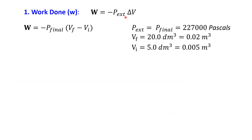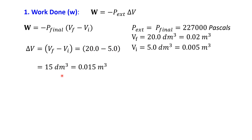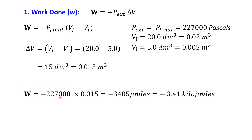Back to our work formula. The external pressure P_ext equals the final pressure, 227,000 pascals. The change in volume ΔV is V final minus V initial, which is 20.0 minus 5.0 equals 15.0 decimeters cubed, or 0.0150 cubic meters. So the work done by the gas is W equals negative 227,000 multiplied by 0.0150, giving W equals negative 3,405 joules, or approximately negative 3.41 kilojoules.